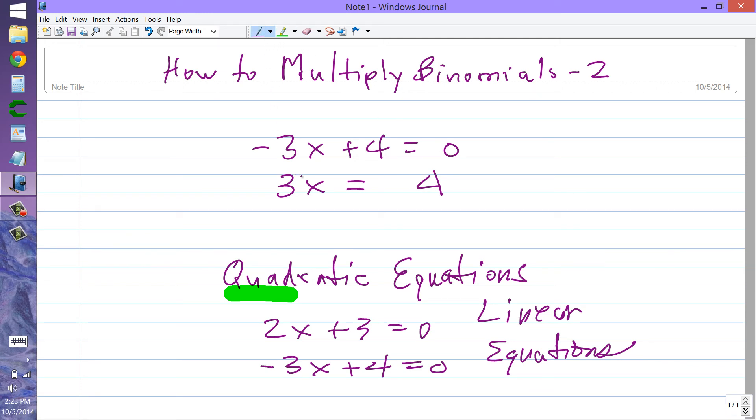3x equals 4. And finally, we can divide through by 3 to get x equals 4 thirds.